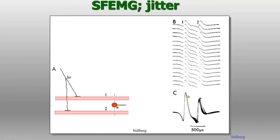But when superimposing the sweep after triggering on the first signal, we can see that the time between the two varies a little. That time variability is due to a variable time delay at the neuromuscular junction, on the order of 10 to 30 microseconds. This is the normal variability — the normal jitter.